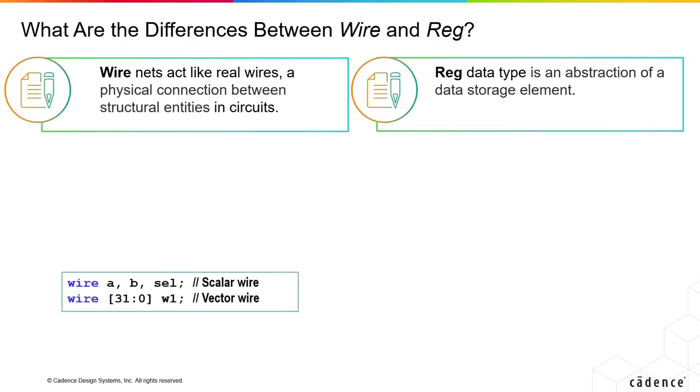In the case of a wire, it's essentially describing a connection between two points, or many points. It's a physical connection between multiple blocks. They can all be within a single block as well, and it's like a connector. There are no values getting stored in them, it's just driving.